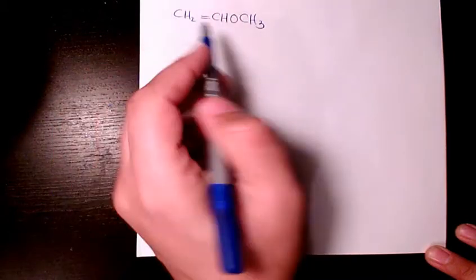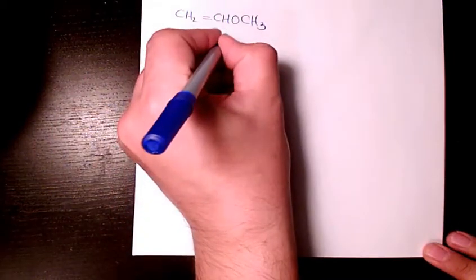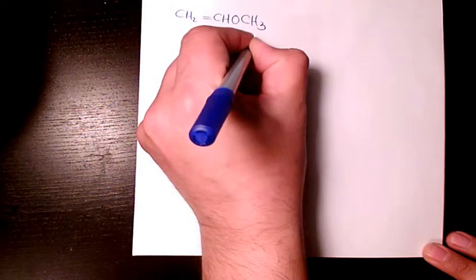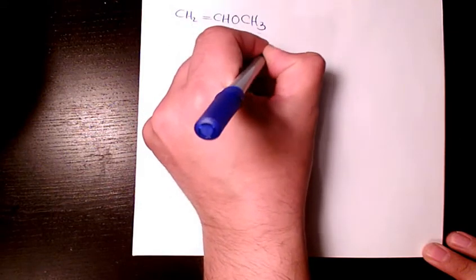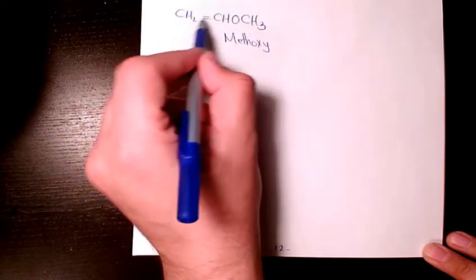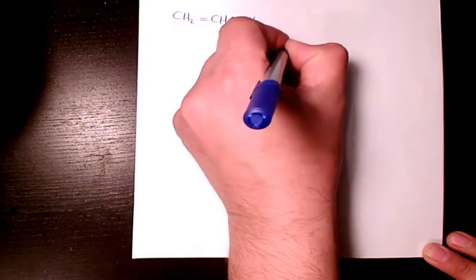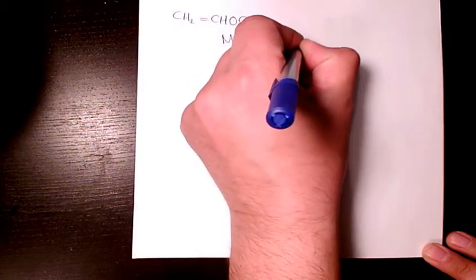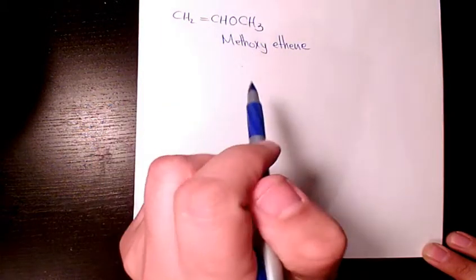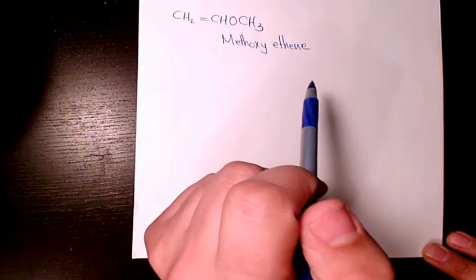If I want to name it, here we have an alkoxy group, so it's going to be methoxy. This part is going to be ethene, so methoxy ethene is going to be the IUPAC name of this organic compound.